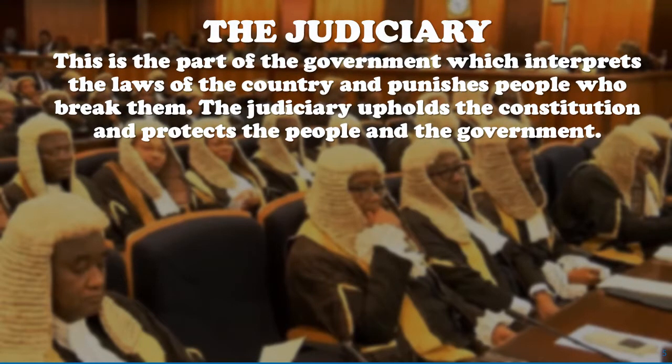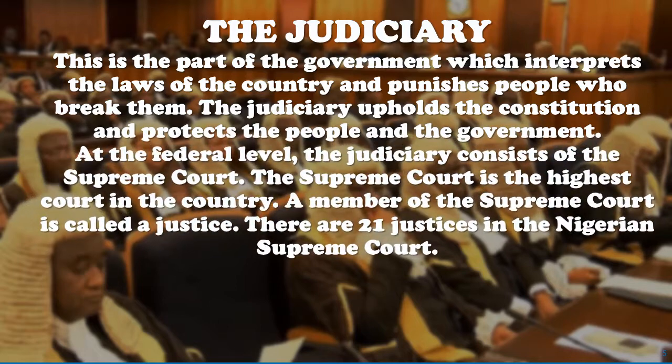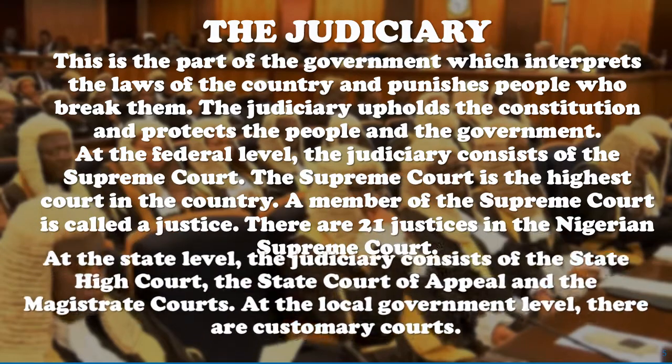The third arm of government is the judiciary, which interprets the laws of the courts and punishes people who break them. The judiciary upholds the constitution and protects the people and the government. At the federal level, the judiciary consists of the Supreme Court. The Supreme Court is the highest court in the country. A member of the Supreme Court is called a justice. We have 21 justices in Nigeria's Supreme Court.